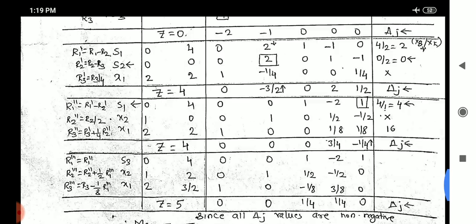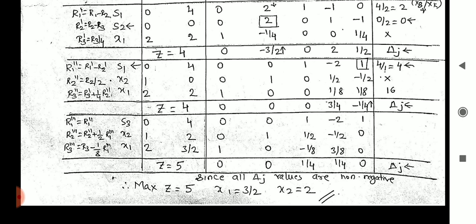Once you are done with this, then subsequent values, as I discussed earlier, they will yield max z equals 5, x1 equals 3 by 2, x2 equals 2. That is all. Thank you.